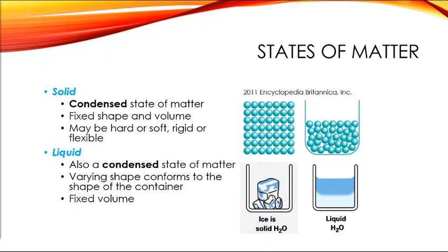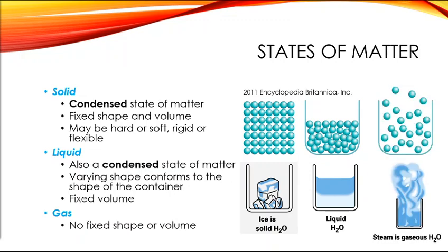Because liquid atoms can move, liquids have varying shapes. You can pour a gallon of milk into a cup-sized container and it takes the shape of the cup. However, you cannot smush those atoms any closer together — they're as close as possible — so a gallon of milk cannot fit into a cup-sized container. The volume stays fixed even though the shape changes.